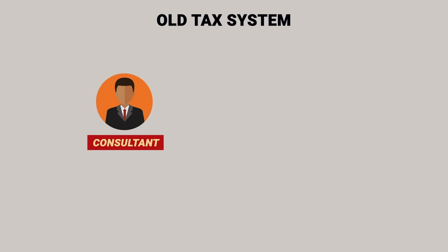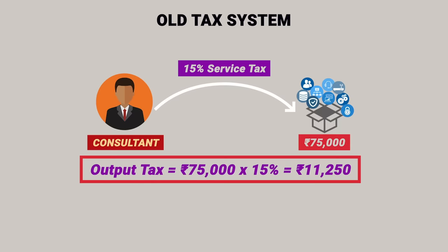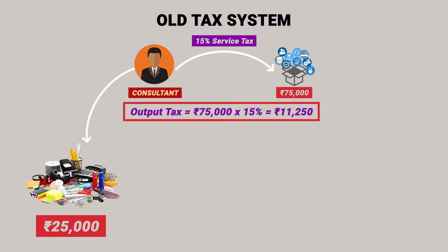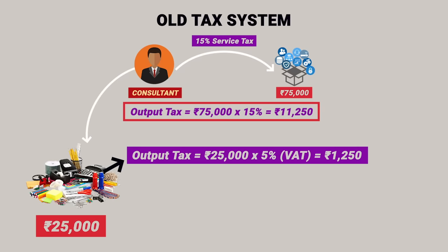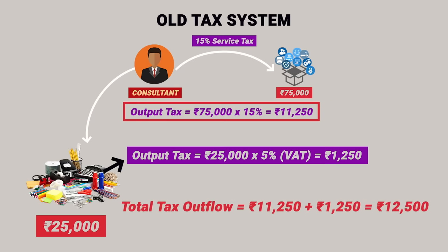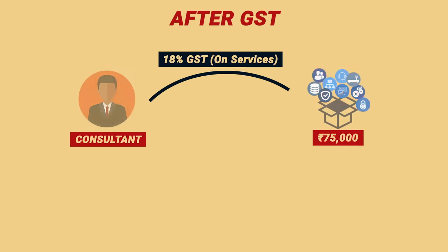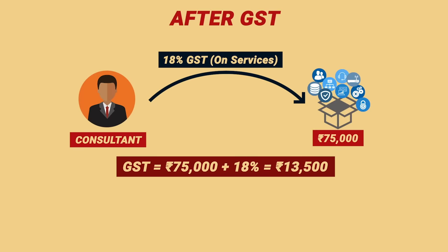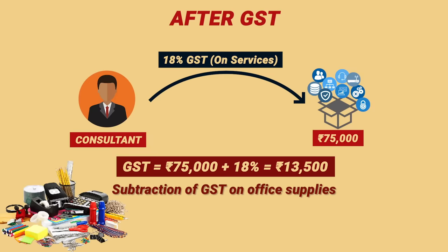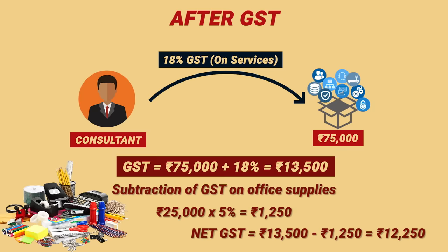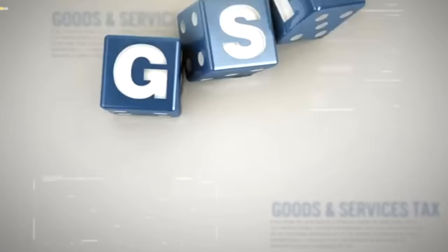In the old tax system, if a consultant charges 15% service tax on services of 75,000 rupees, his output tax was 75,000 into 15%, which is 11,250 rupees. If he then purchased office supplies for 25,000 rupees paying 5% VAT, which is 1,250 rupees, he still had to pay the full 11,250 rupees of service tax without any deduction for the 1,250 rupees of VAT already paid on the stationery. So his total tax outflow was 12,500 rupees. But after GST implementation, GST on services of 75,000 rupees at 18% amounts to 13,500 rupees, but now he can claim the subtraction of GST on office supplies — 25,000 into 5% is 1,250 rupees — giving a net GST liability of 12,250 rupees.